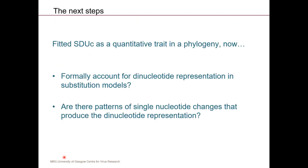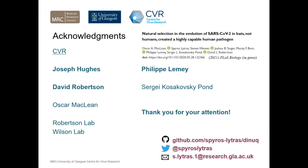To finish off: I've shown how we've used the SDUC for fitting it as a trait into phylogenies and monitoring adaptive shifts. But I really want to open the floor to discussion and get feedback, because I'm now trying to formally fit this dinucleotide bias — this under-representation — into substitution models, and more formally assess how these changes might happen nucleotide substitution by nucleotide substitution within proper phylogenetic methods.